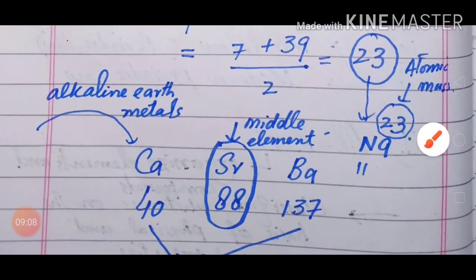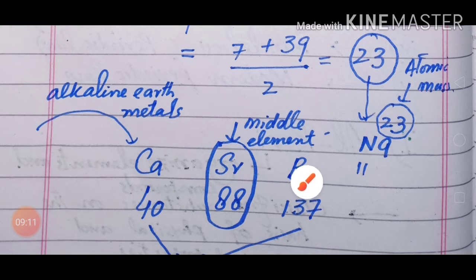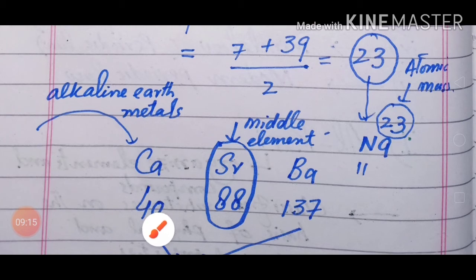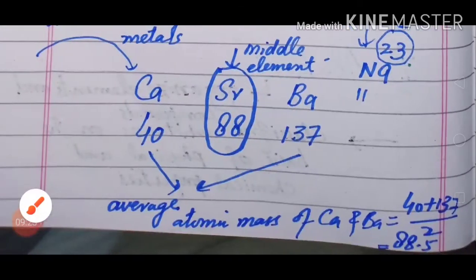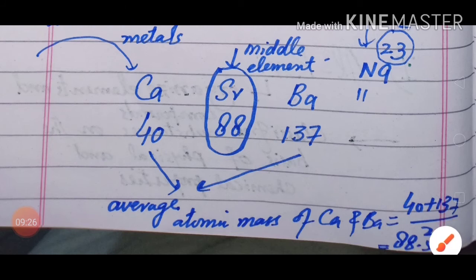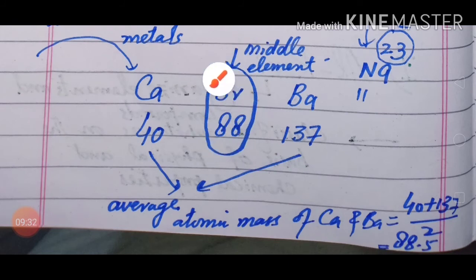A second example is calcium, strontium, and barium. Calcium's atomic mass is 40 and barium's is 137. Their average: (40 + 137) ÷ 2 = 88.5, which is the atomic mass of strontium — the middle element. This group was also named a triad.